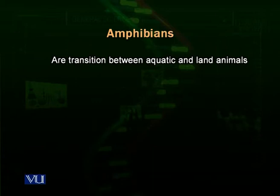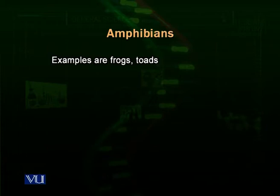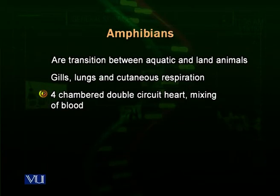Now we talk about amphibians. Amphibians are called a transition between aquatic and terrestrial life. They include frogs, toads, salamanders, and other organisms. These are also categorized as ectothermic animals — they do not produce endogenous heat from metabolic reactions and warm themselves using external factors. Amphibians have a three-chambered heart whose two ventricles are not properly separated, so oxygenated and deoxygenated blood mixes. They do have a double circuit heart that receives blood from the body and sends blood towards the lungs.